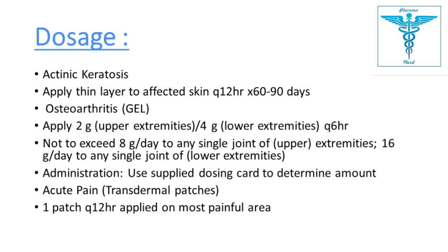For osteoarthritis topical use, apply 2 grams of gel on upper extremities and 4 grams on lower extremities; total dose should not exceed 8 grams per day for upper extremities or 16 grams per day for lower extremities. Use the supplied dosing card to determine the amount. For acute pain, one transdermal patch may be applied to the most painful area every 12 hours.